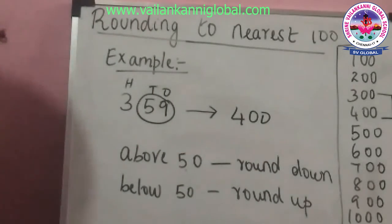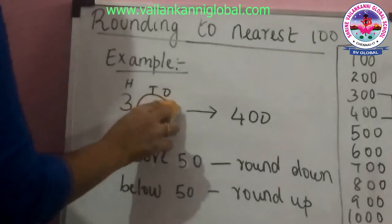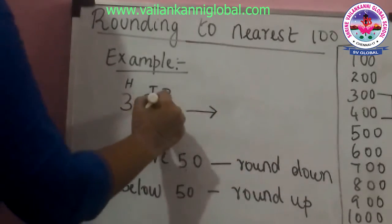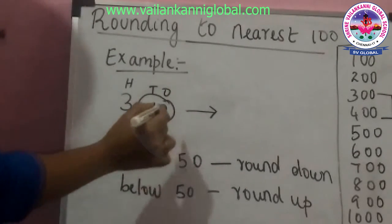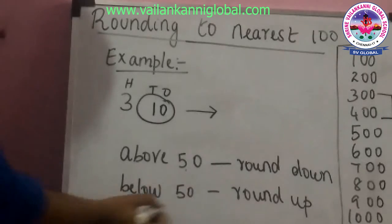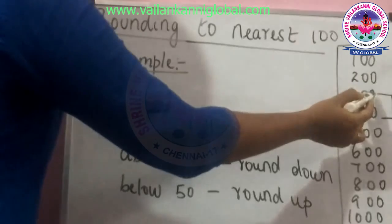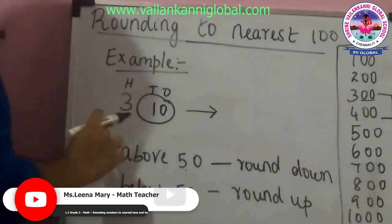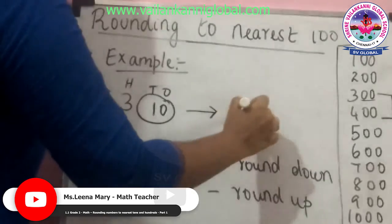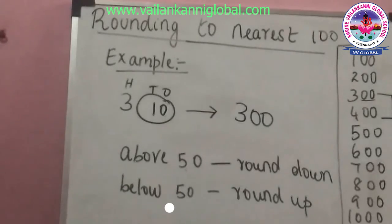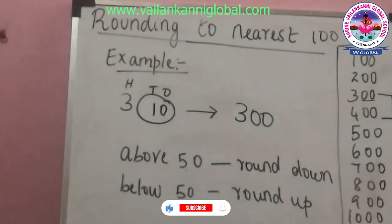For another example, say the number is 310. The last two digits are 10, which is below 50, so you round up. Round up means the number on top is 300, so 310 rounded to the nearest hundred is 300. In this way, you can round any number to either the nearest tens or hundreds using your knowledge of place values.